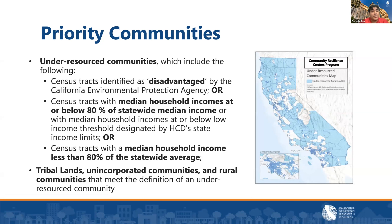All communities are eligible to apply for the CRC program. We are directed per statute to prioritize projects located in and benefiting under-resourced communities, as defined in statute. The map here highlights all under-resourced communities in blue. Tribal lands, unincorporated communities, and rural communities that meet the definition of under-resourced communities qualify as priority communities. All applicants must discuss if and how their proposal considers, involves, impacts, and benefits priority communities.